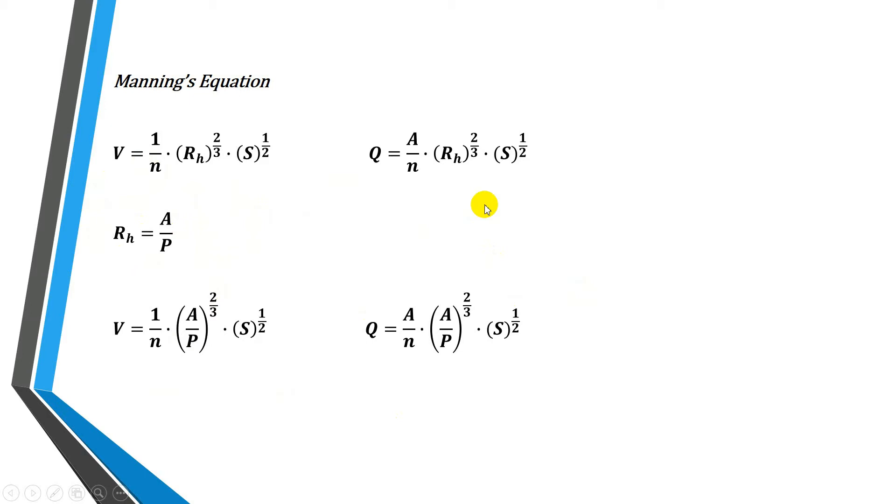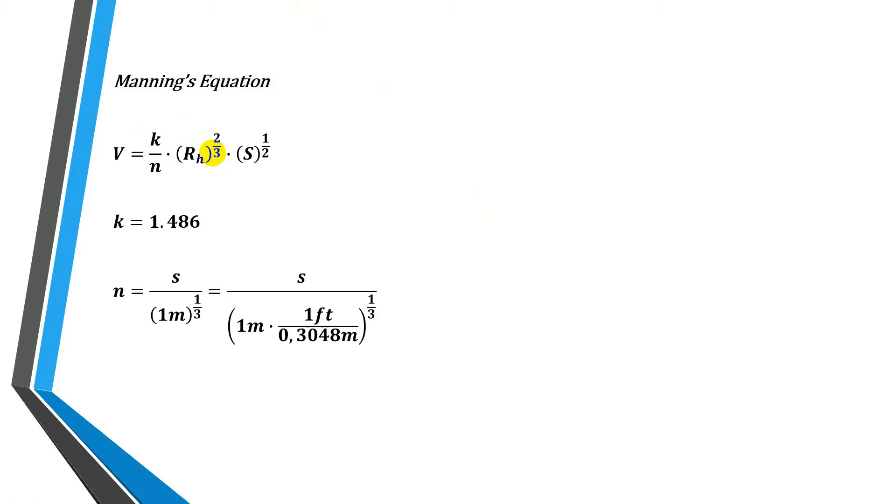These equations are defined in SI units. If we want to use them in US customary units, we need to perform some conversion using a factor. The value of this factor is 1.486, and it is because the n-coefficient of roughness is expressed in meters, and the respective conversion is as shown.